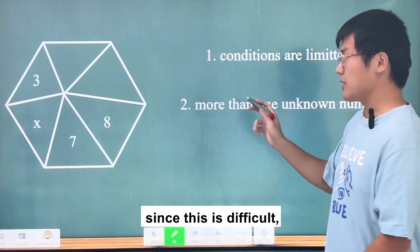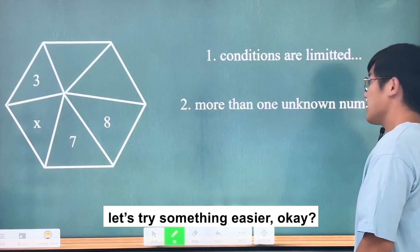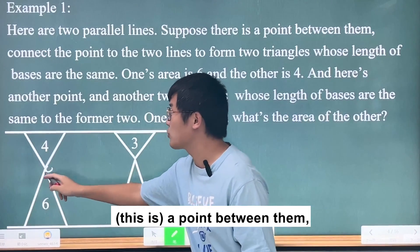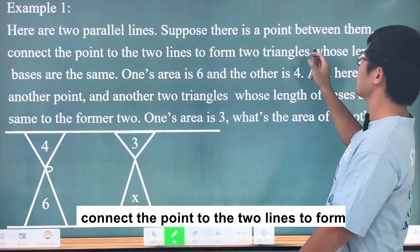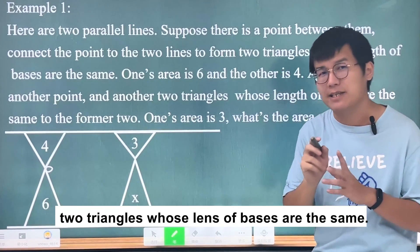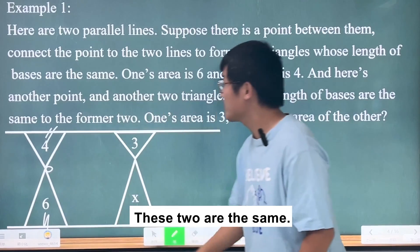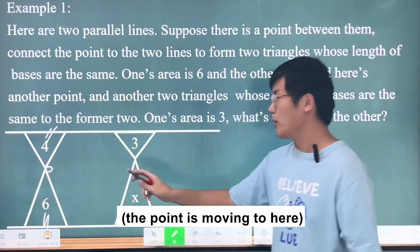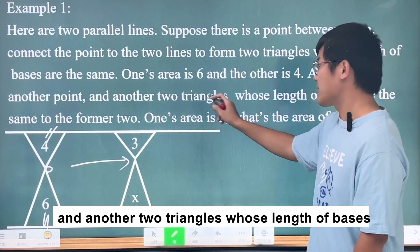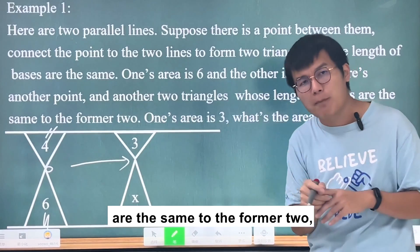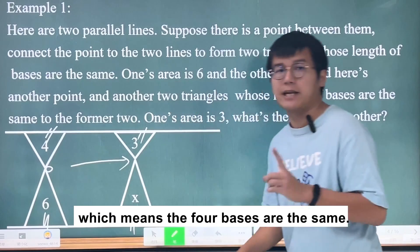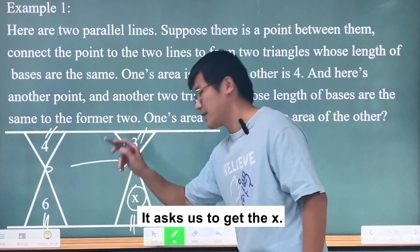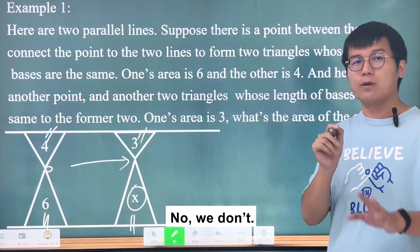Since this is difficult, let's try something easier. Look at this example: here are two parallel lines. Suppose there is a point between them, connected to the two lines to form two triangles whose lengths of bases are the same. One's area is 6 and the other is 4. Now the point moves, and another two triangles have the same base lengths as the former two — all four bases are the same. One's area is 3 and what's the area of the other?